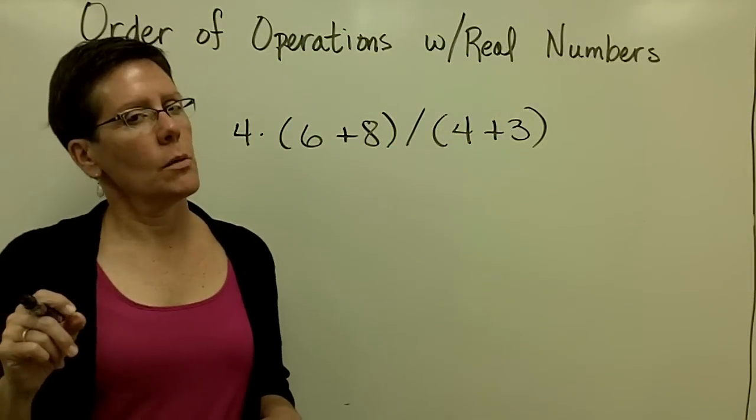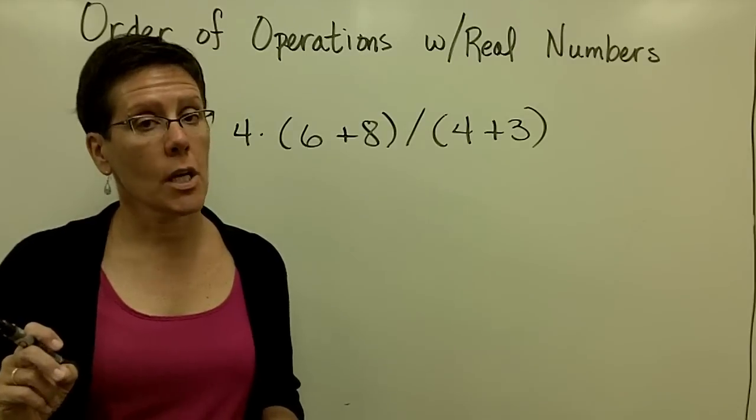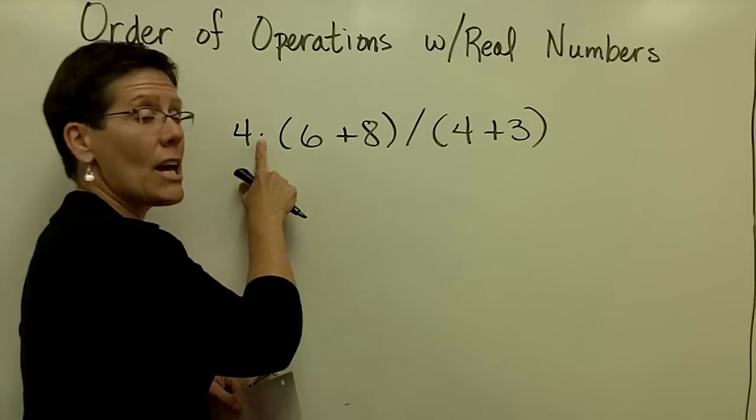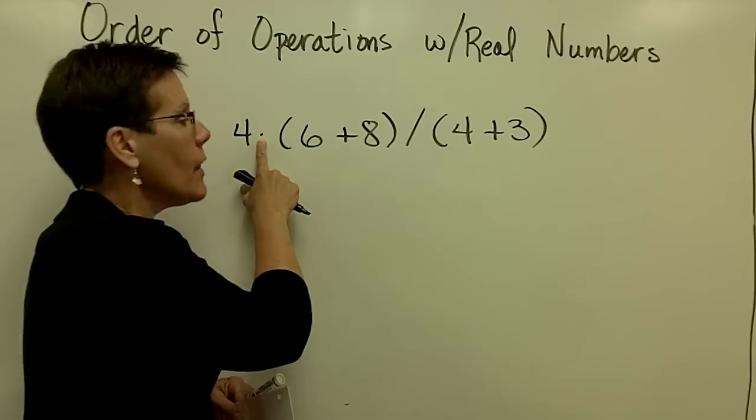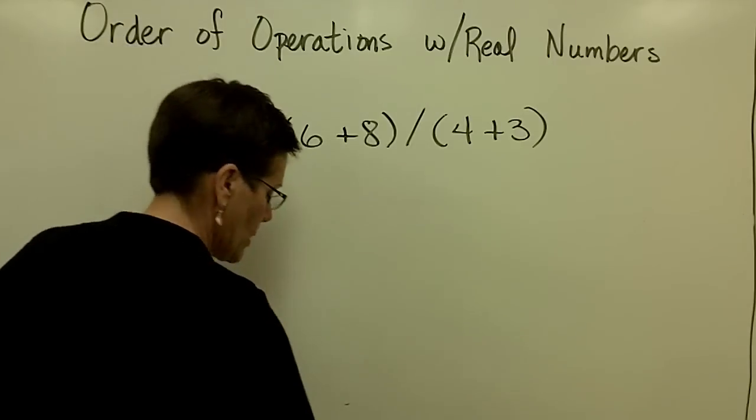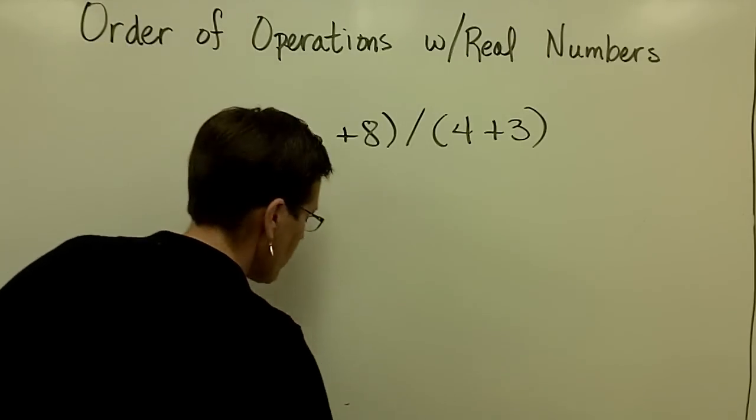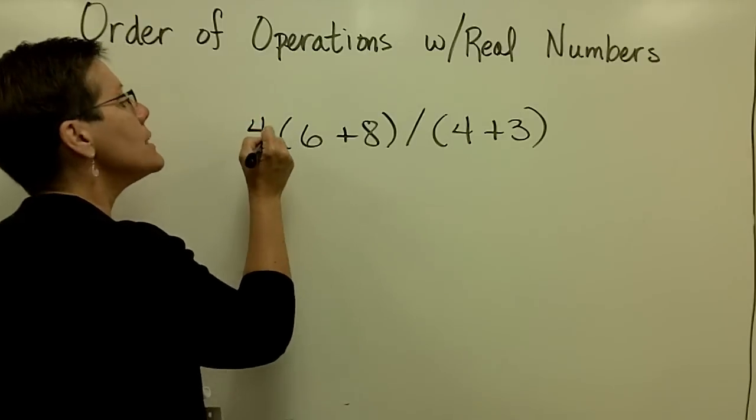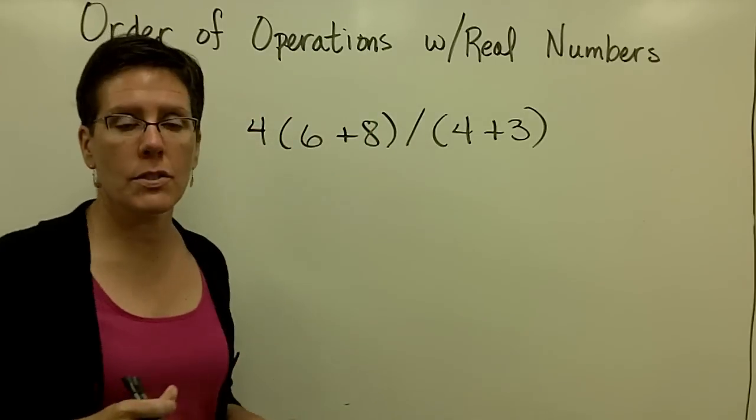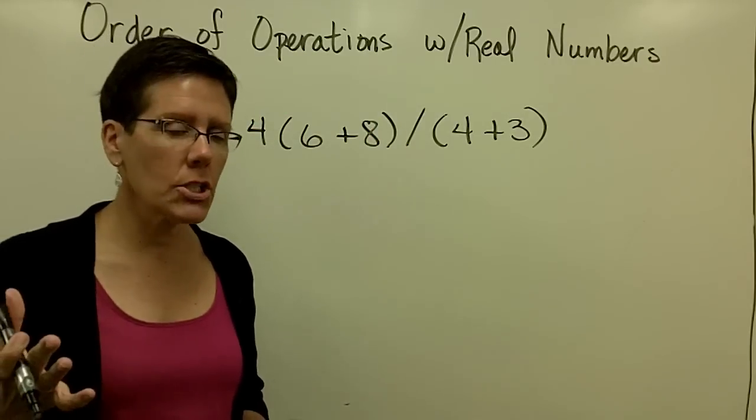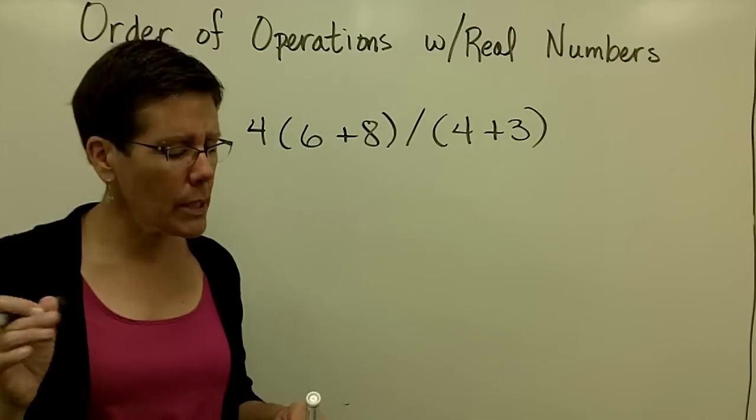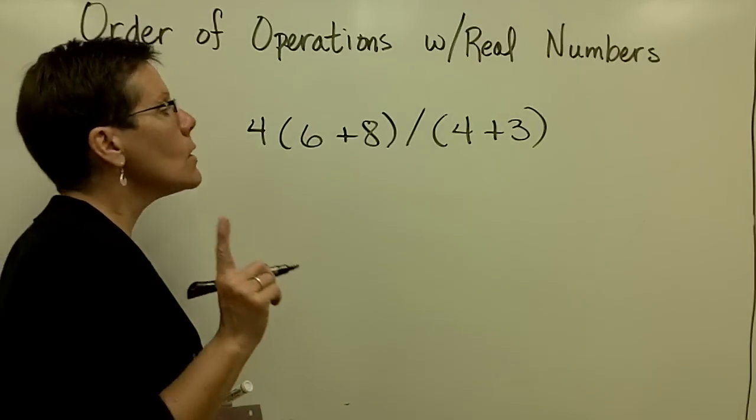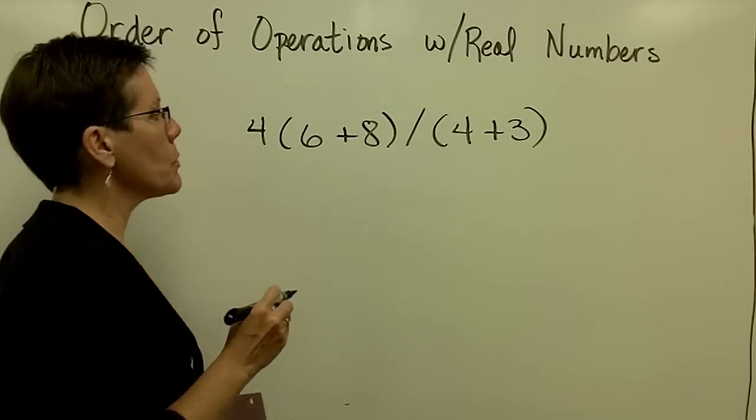Textbooks often show a little bit of redundancy when it comes to multiplication. That dot right there is not required. They could have written that as four times whatever is in that set of parentheses. Something to caution you there whenever you see those dots. Order of operations here says to do what's in the parentheses first.